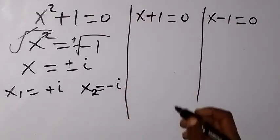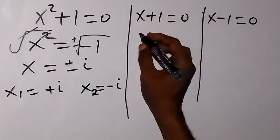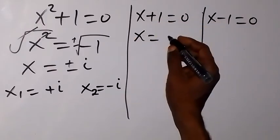Then from here, when we solve for x in this case, we can take the positive 1 to this side, and we have x equals to minus 1.